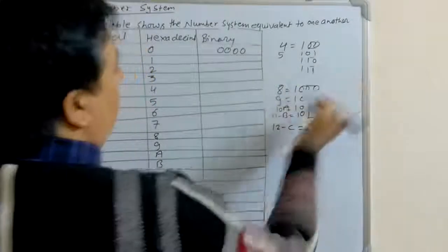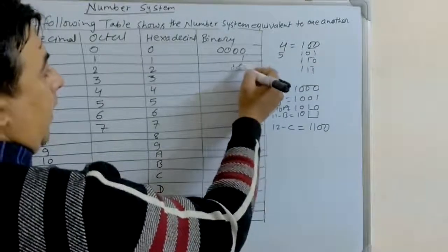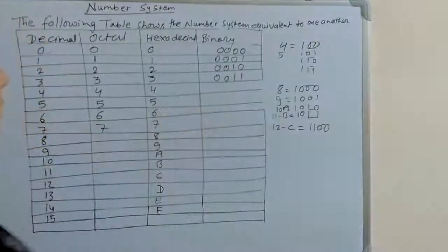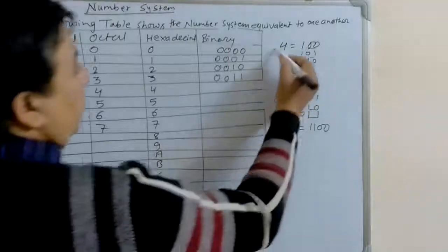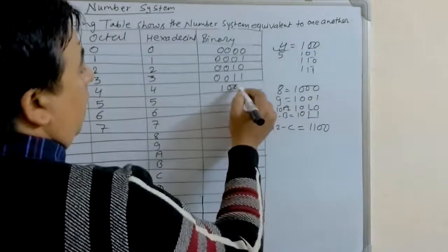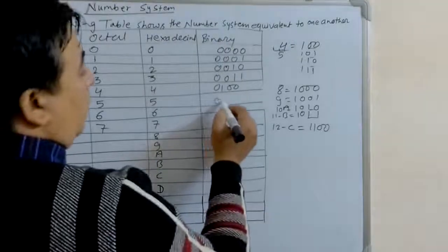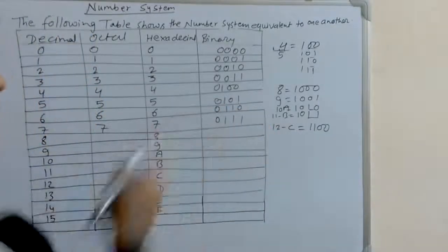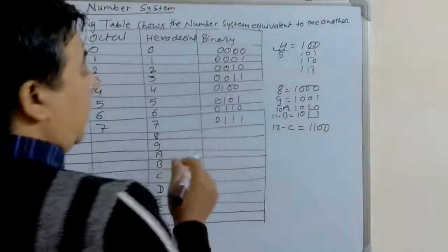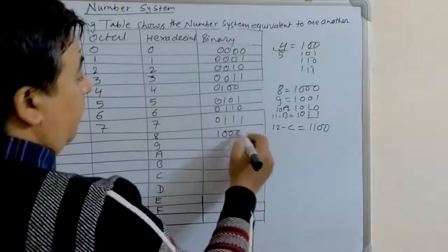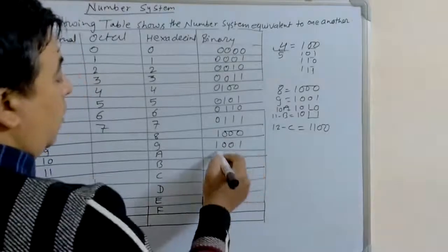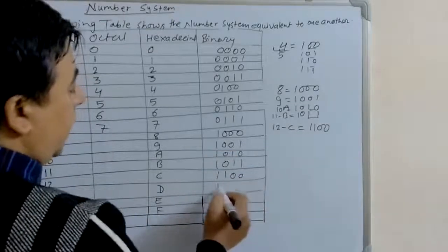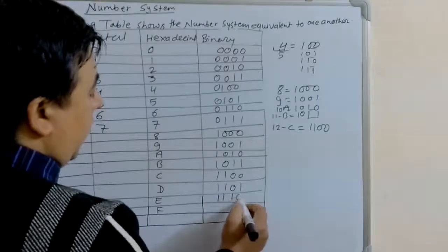Continuing the binary table: 0 is 0000, 1 is 0001, 2 is 0010, 3 is 0011, 4 is 0100, 5 is 0101, 6 is 0110, 7 is 0111, 8 is 1000, 9 is 1001, 10 is 1010, 11 is 1011, 12 is 1100, 13 is 1101, 14 is 1110, 15 is 1111.